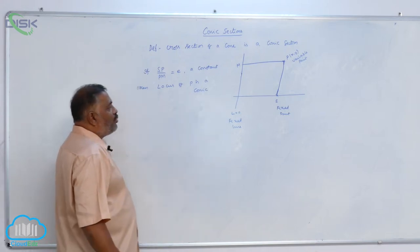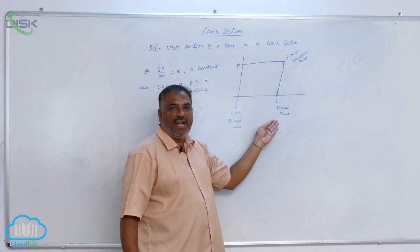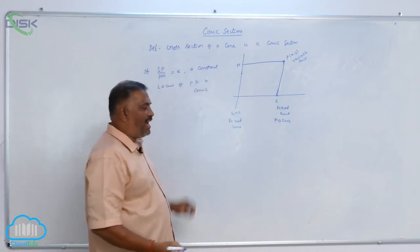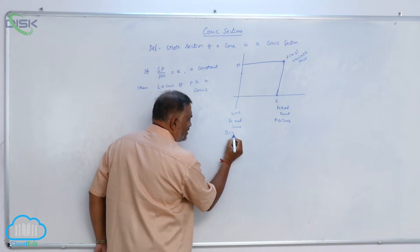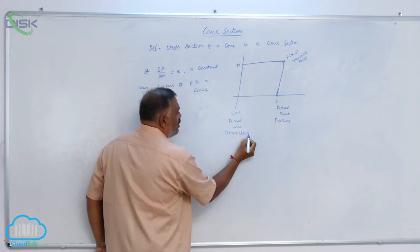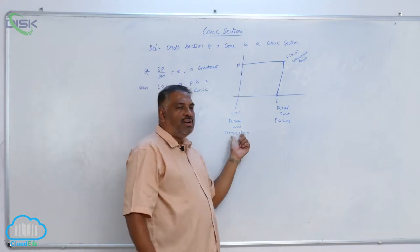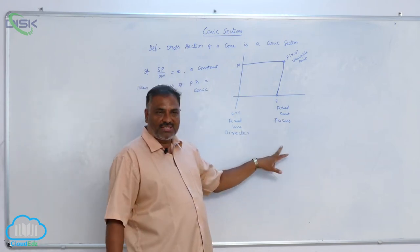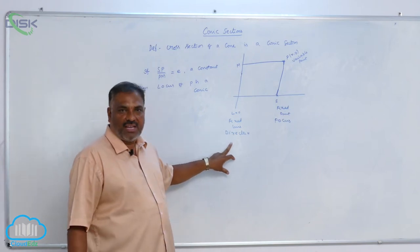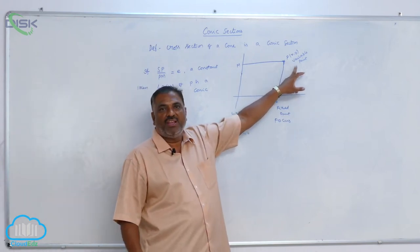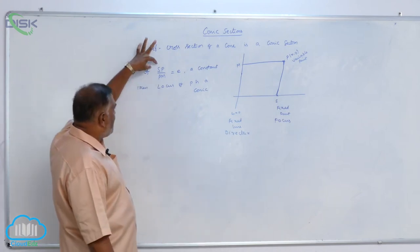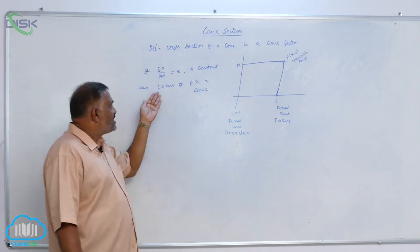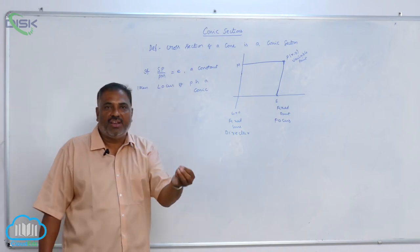Here, we define fixed point as focus and fixed line as directrix. So, using these two, we will define the conic again. Let S be the focus, L equals 0 be the directrix, P is a variable point. If SP by PM is equal to E, a constant, then locus of P is nothing but a conic equation.